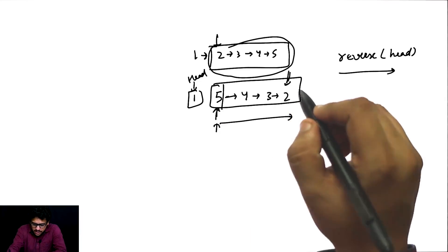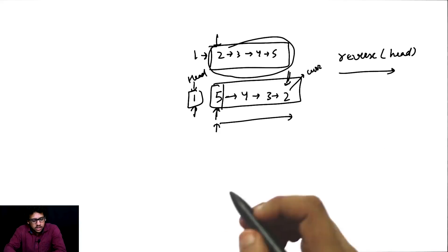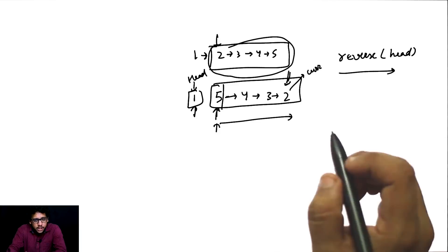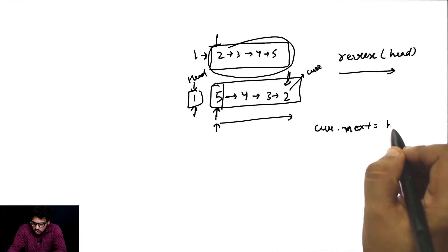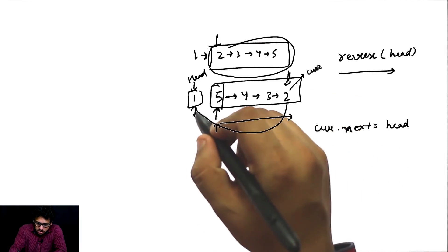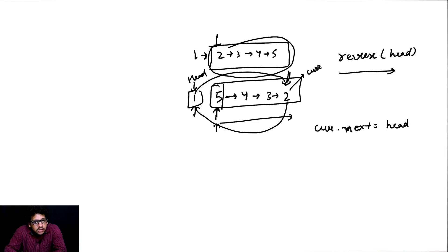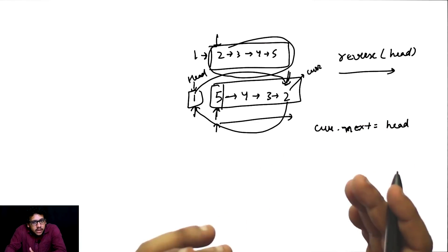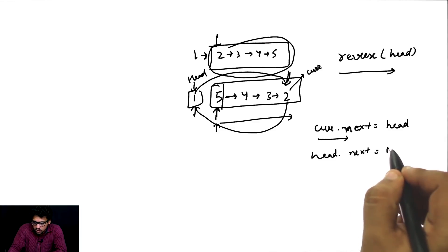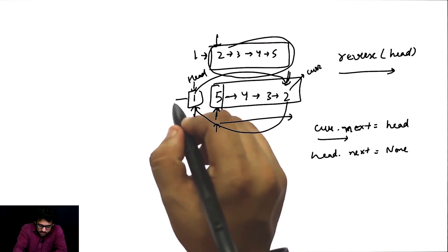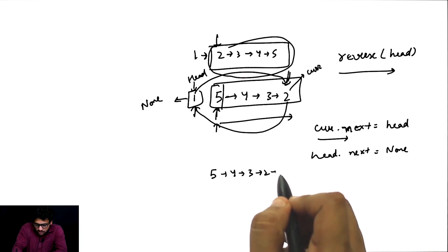What I need to do now is reach the last node. I will start from here and reach the last node. Let's say its name is current. After the induction step, I need to do current.next equal to head. This will link 5→4→3→2, but we don't want 1's next to still be 2. So one extra step: after assigning this, I should do head.next equal to None.